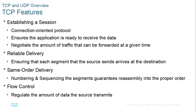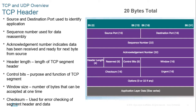Reliable delivery — positive acknowledgement and retransmission — ensures every segment sent by the source arrives at the destination, because the destination confirms receipt. If it fails to confirm, the data is retransmitted. Sequencing numbers all segments so they can be put back in the right order even if received out of order. Flow control uses a sliding window to tell the transmitting machine how much data can be sent at one time, opening or closing the window as conditions allow.